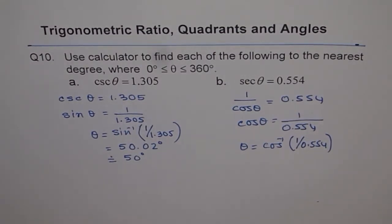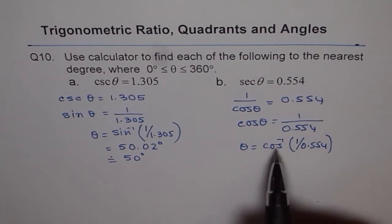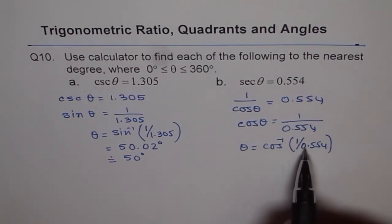Now you can use your calculator. And if you use your calculator, you'll get cosine inverse of with bracket open, 1 divided by 0.554. This number actually is more than 1. So what will you get in the calculator? You'll get an error.